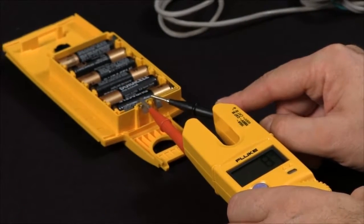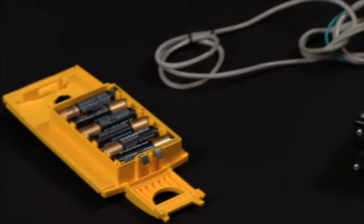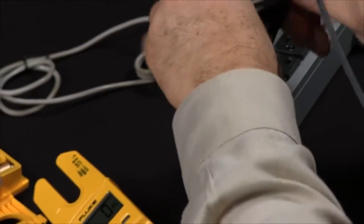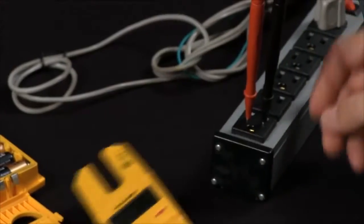To take an AC measurement, all I do is take my probe tips, and I can place them directly into the socket, and now I am measuring 118 volts AC.